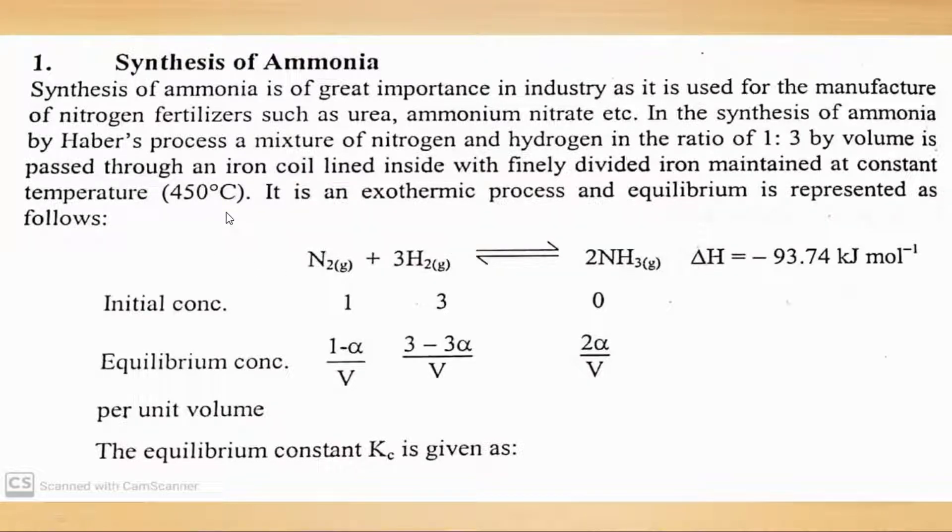The second thing is volume change or pressure change. If the moles of reactants and moles of product differ - here it's one mole nitrogen, three moles hydrogen giving two moles ammonia, total four moles to two - high pressure will favor the reaction to move in that direction where volume is decreasing. So high pressure will favor ammonia formation.